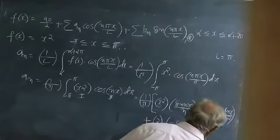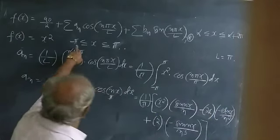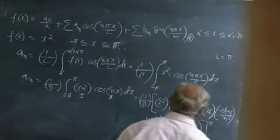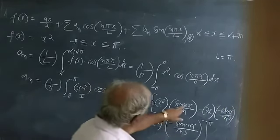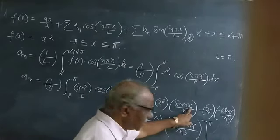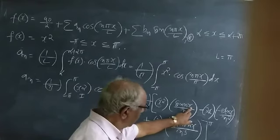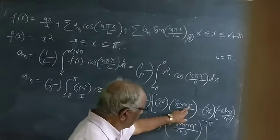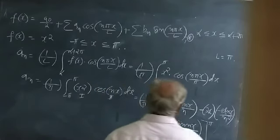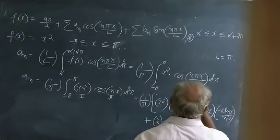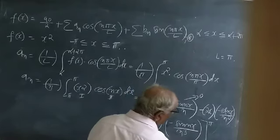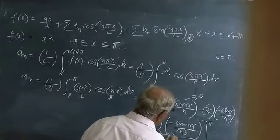Now with limits x = -π to x = +π: note that sin(nπ) = 0 and sin(n(-π)) = 0. So the first term, which contains x²·sin(nx)/n, evaluated at both limits gives 0. Similarly the last term containing sin(nx)/n³ also evaluates to 0 at both limits. So those terms vanish.